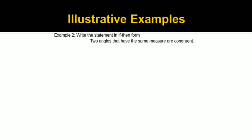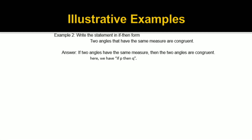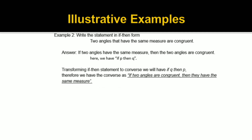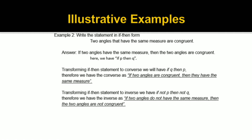To understand it well, let's have another example. Write the statement in if-then form: 'Two angles that have the same measure are congruent.' Answer: If two angles have the same measure, then the two angles are congruent. Here we have if P, then Q. Transforming to converse, we have if Q, then P. Therefore, the converse is: if two angles are congruent, then they have the same measure. Transforming to inverse, we have if not P, then not Q. Therefore, the inverse is: if two angles do not have the same measure, then the two angles are not congruent.